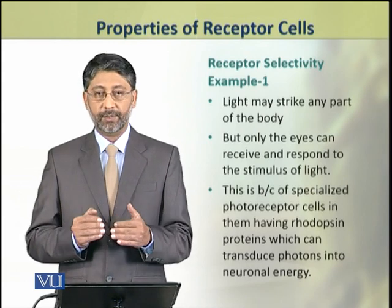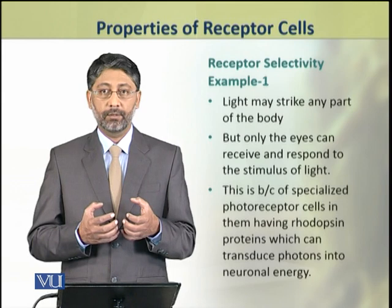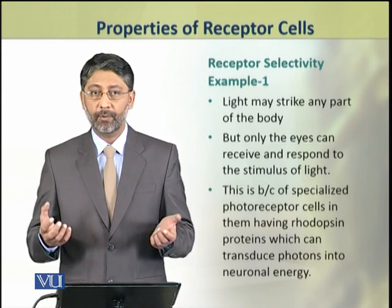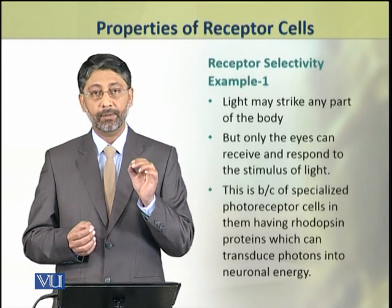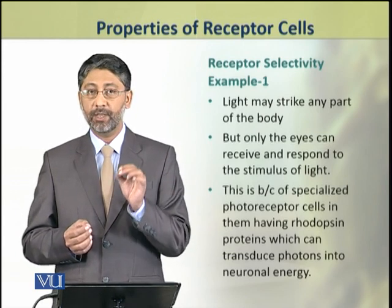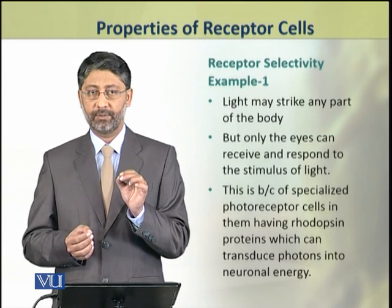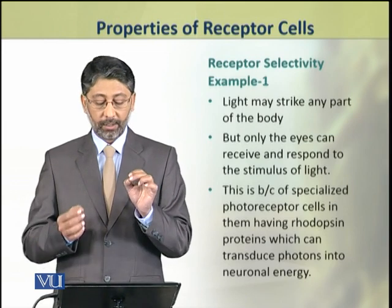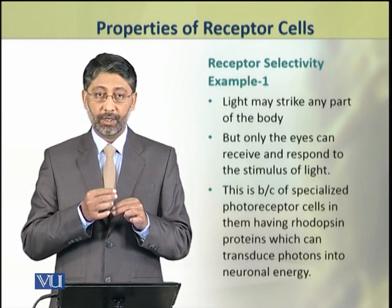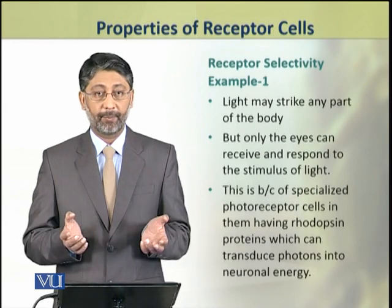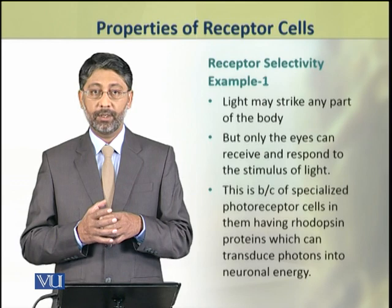We shall take few examples of selectivity of receptor cells. In the first example, light may strike at any part of our body, but only the eyes have special photoreceptors that can perceive light, because these photoreceptors are activated by the stimulus of light. They have special proteins called rhodopsins, joh ke light ki energy ko transduce kar sakti hain into the energy of nerve impulse. Baqi ke body ke cells ke paas yeh capacity nahi hain. Lehada, photoreceptors are selective for receiving the light energy in the form of photons.